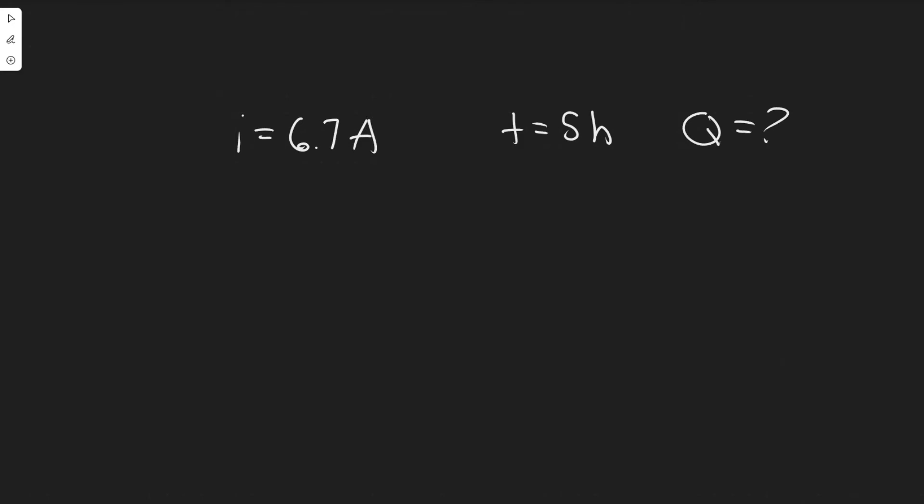You need to know that one amp is equal to one Coulomb per second. So instead of writing it as amp, we can write it as 6.7 Coulombs per second.